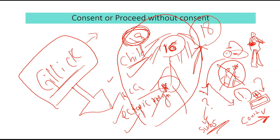The child can accept treatment but cannot refuse. If she refuses, you will speak to the parents and not consider her capacitated, because she may not understand that the ectopic pregnancy is a source of sepsis and she could die. But if she accepts, proceed with consenting the patient.